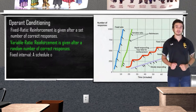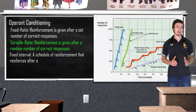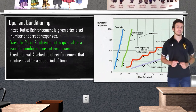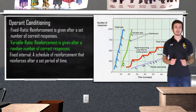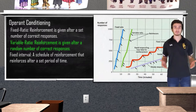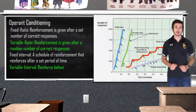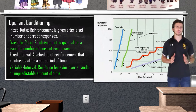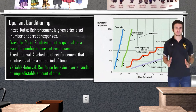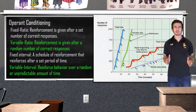Fixed interval is a schedule of reinforcement that reinforces after a set period of time. If I give you a pop quiz at 3 o'clock every Friday, this would be a fixed interval schedule — chances are the closer we get to Friday, the more studying you will do. Variable interval reinforces behavior over a random, unpredictable amount of time. If I were to tell you that pop quizzes were fair game at any time, chances are you would be studying more often to prepare for the uncertainty of the quiz date.